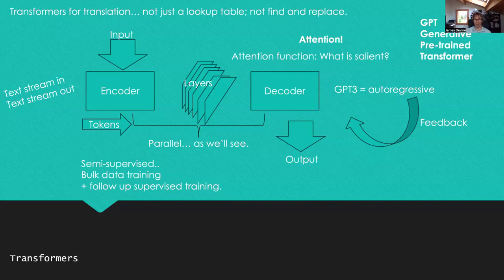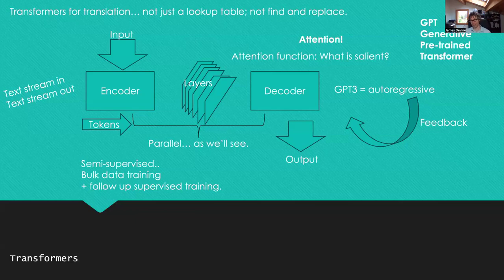GPT models can be bulk trained in an unsupervised way — for example, books out of copyright are fed in wholesale to construct a first draft. This is followed by supervised training, where structured input-output pairs are used: for example, if the input is 'How are you feeling today?' the expected output is something like 'I'm feeling very well, but I'm a computer model so I don't really have feelings.' This input-output pairing trains the model to give coherent responses rather than just parroting repetitions from books.